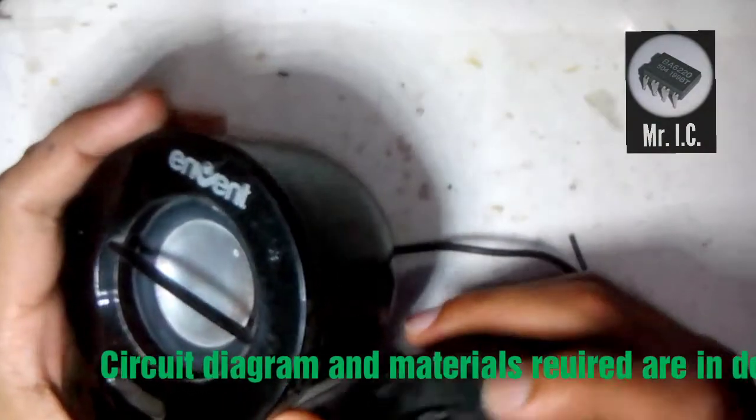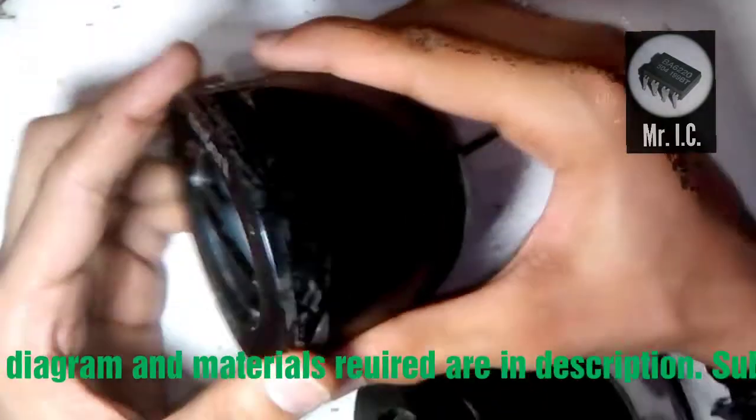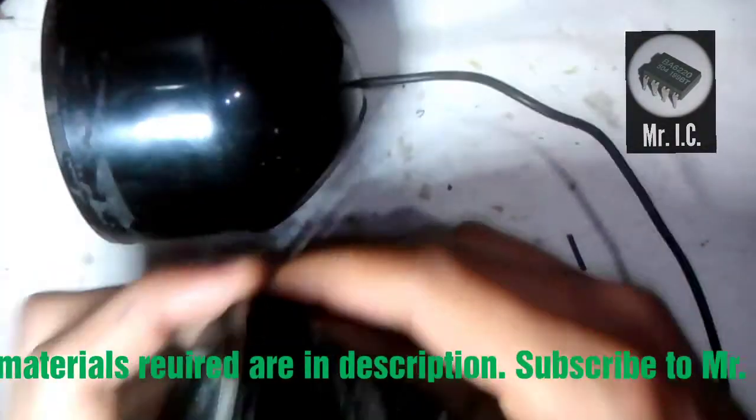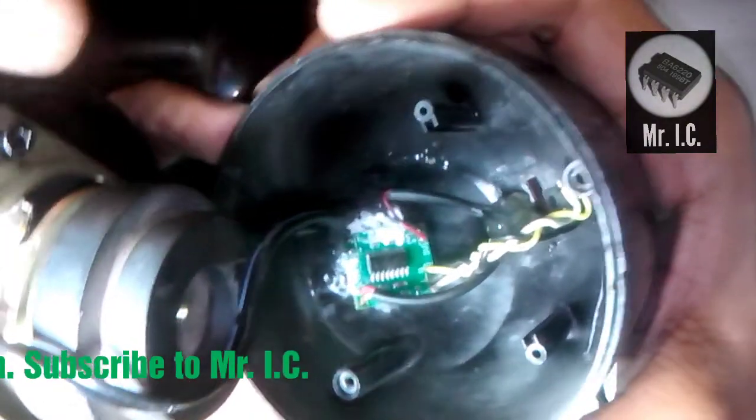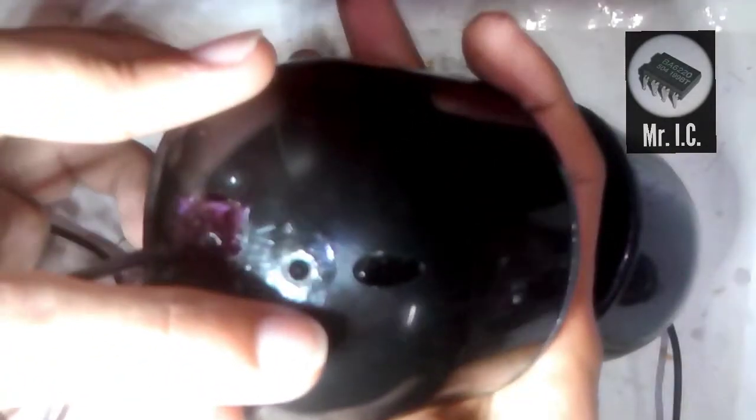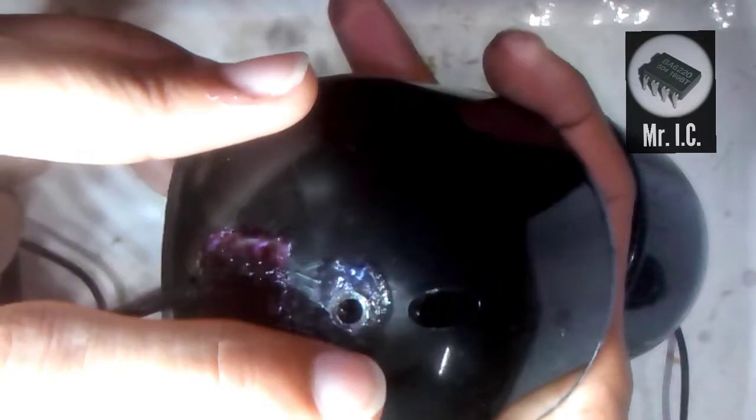These were the speakers which I have repaired. As you can see, I have placed the amp board inside it. And I have placed a 3.5mm female jack instead of the male one as it was suggested by my brother.